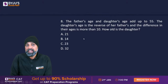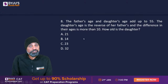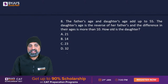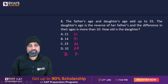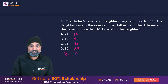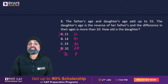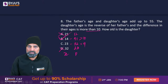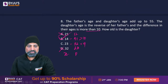Age question: the father's age and daughter's age add up to 55, the daughter's age is the reverse of the father's digits, and the difference in their ages is more than 10. Using the options directly: if daughter is 23, father is 32. Their sum is 55, digits are reversed, and the difference is 9 — less than 10, so that doesn't work. If daughter is 14, father is 41: sum is 55, digits reversed, difference is 27 — more than 10. So the daughter is 14.